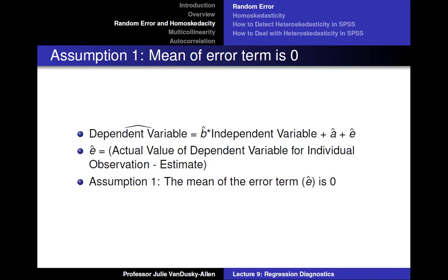Recall that the equation for a regression equation is: dependent variable hat equals b hat times the independent variable plus a hat plus e hat. Remember that e hat equals the actual value of our dependent variable for an individual observation minus the estimate of our dependent variable for that observation based on the regression equation. Now, after calculating all of our errors for a particular regression model, if we take the mean of those errors, the average should be 0.